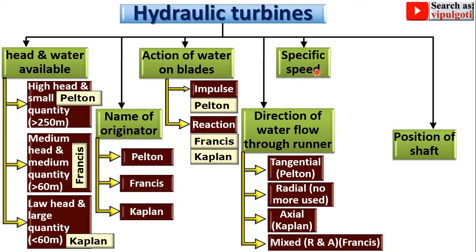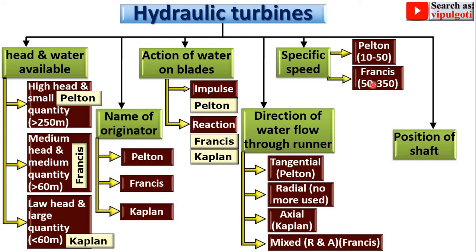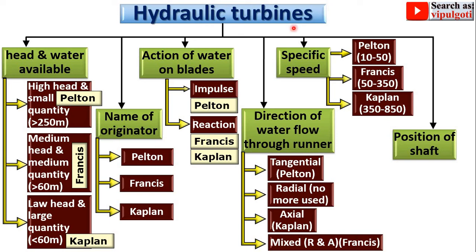Next, classification according to specific speed. Low specific speed of 10 to 50 — the Pelton turbine is suitable. Medium specific speed of 50 to 350 — the Francis turbine is suitable. High specific speed of 350 to 850 — the Kaplan turbine is suitable. So generally these correspond to low, medium, and high specific speed hydraulic turbines.